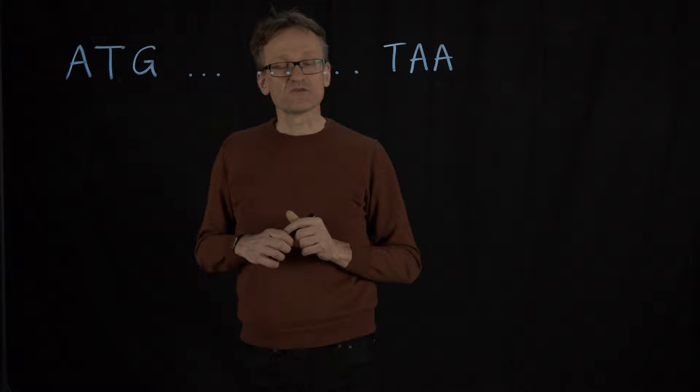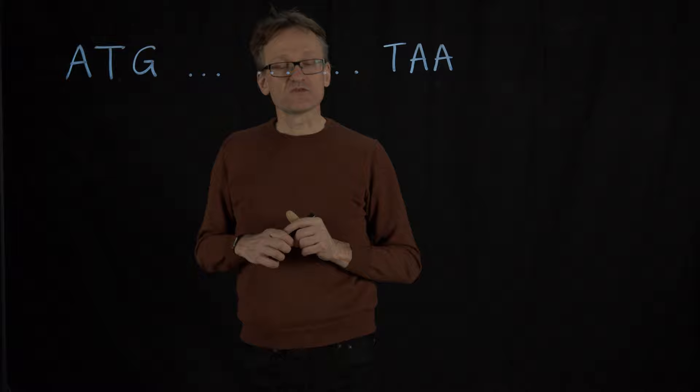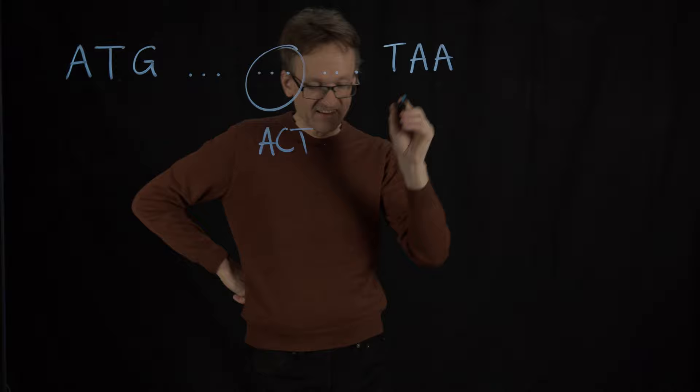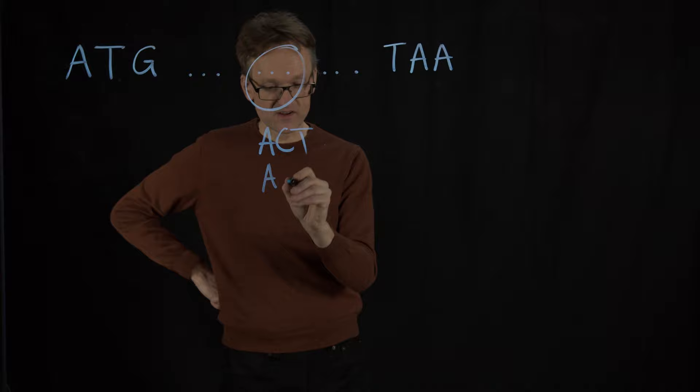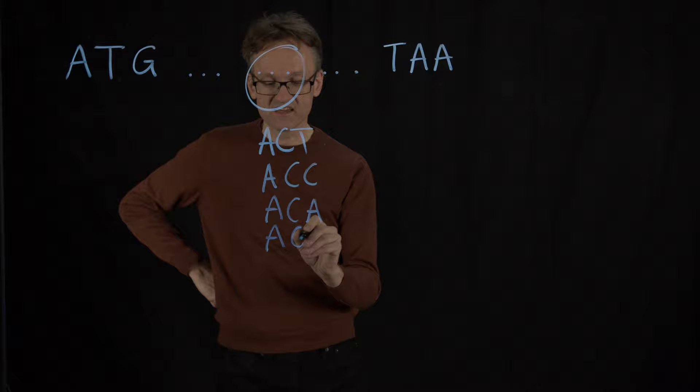There are a couple of different types of mutations. If I have a triplet here in the middle — let's say that's ACT — obviously you know the genetic code by heart. Just kidding, I don't. That is arginine, which I actually do happen to know. Arginine is special because I can change that to ACC, or ACA, or ACG, and all of them will still code for arginine.